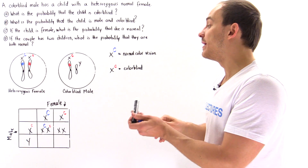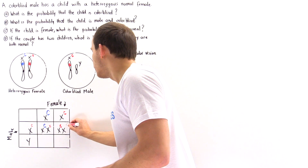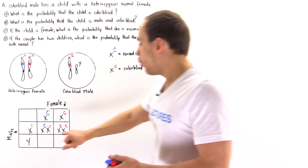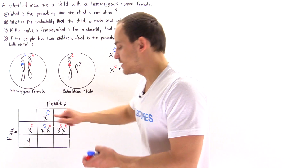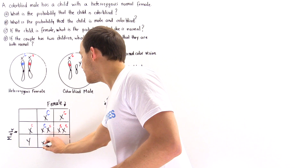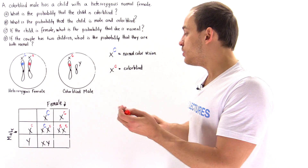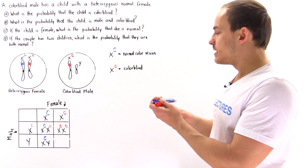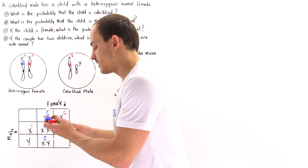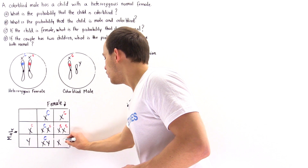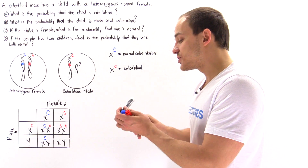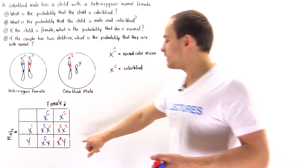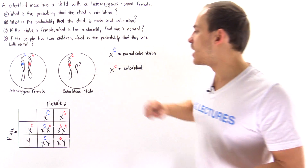When the X sperm combines with the colorblind X egg, we again get a female, but now that female will be colorblind because she has two lowercase red c alleles. When the Y sperm combines with the normal X egg, we produce a male — an XY — and this male will be normal because the X chromosome carries the uppercase C for normal color vision. The last combination is also male, but with a lowercase red c, so this individual will be colorblind just like the colorblind parent.